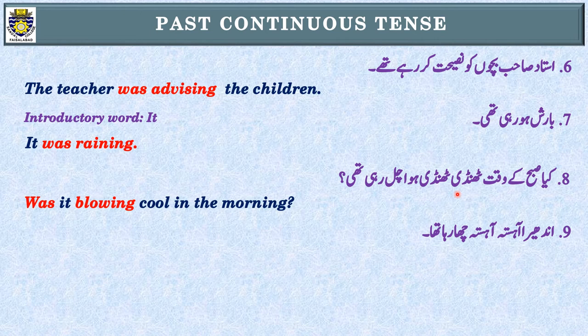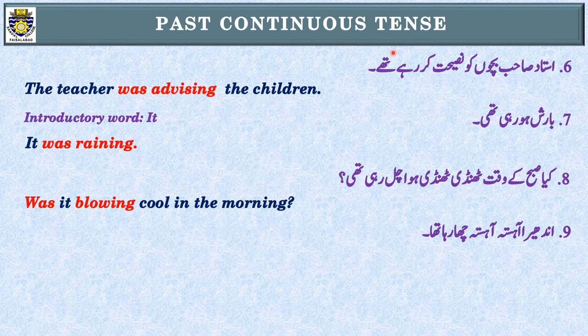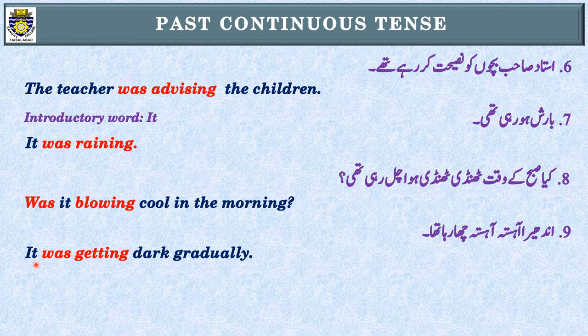Sentence number nine: اندھیرا آہستہ آہستہ چھا رہا تھا۔ First step: 'رہا تھا' — Past Continuous Tense۔ Second step: subject — 'اندھیرا'۔ جس طرح بارش اور ہوا کے لیے it use کرتے ہیں، اندھیرے کے لیے بھی it use کر سکتے ہیں۔ It کے ساتھ Past Continuous Tense میں ہمیشہ was use کریں گے: It was getting dark gradually. یہ کچھ sentences ہیں جن کے ساتھ ہم it use کرتے ہیں۔